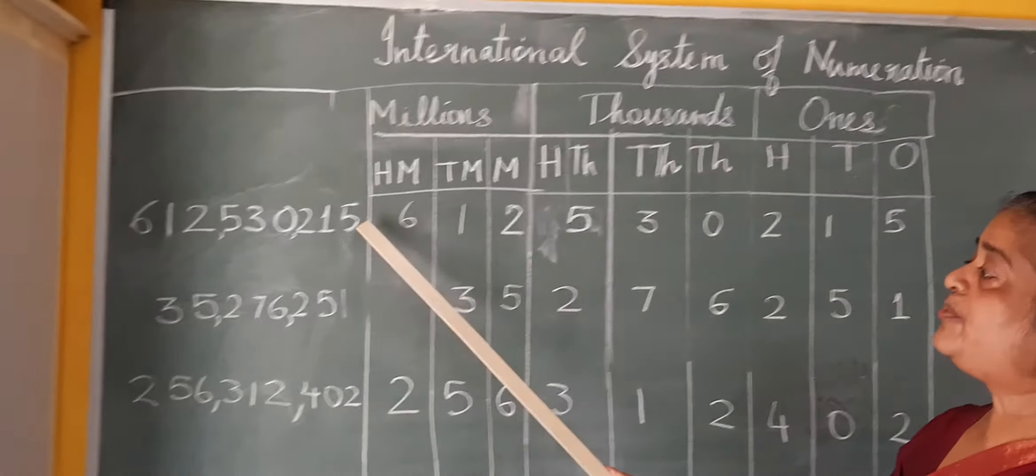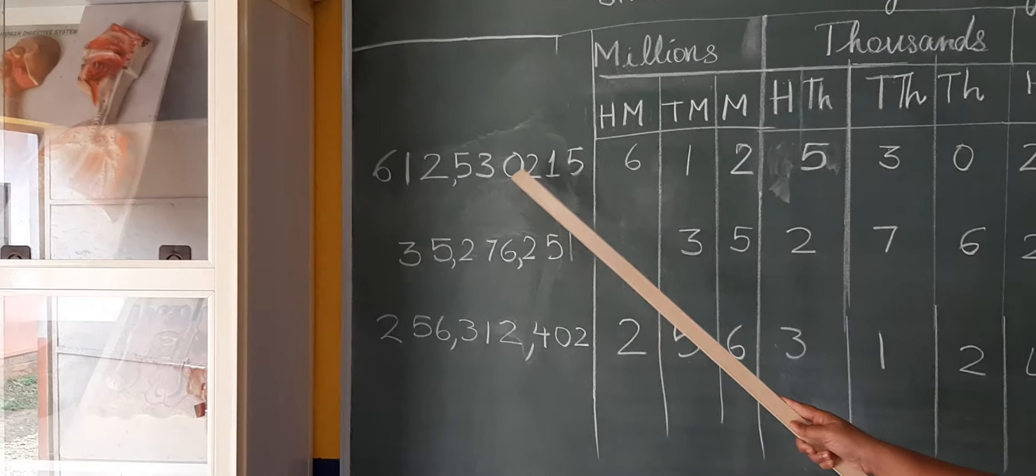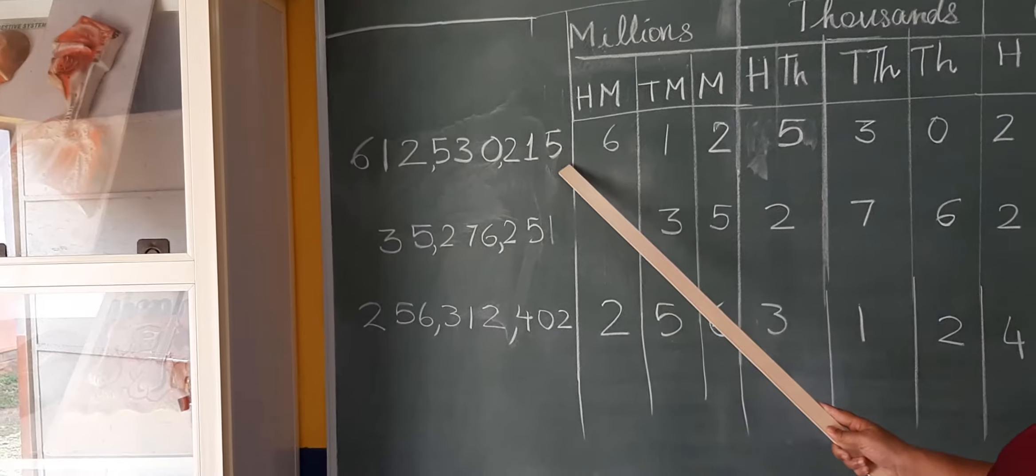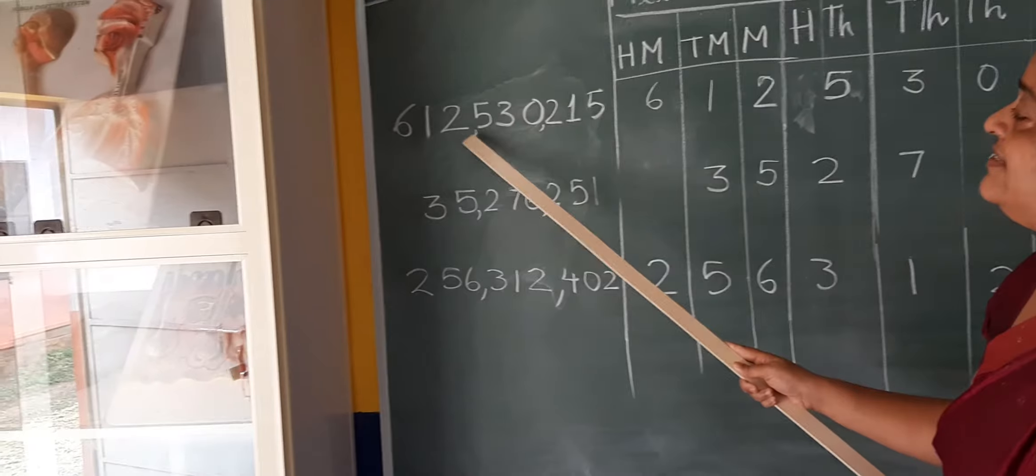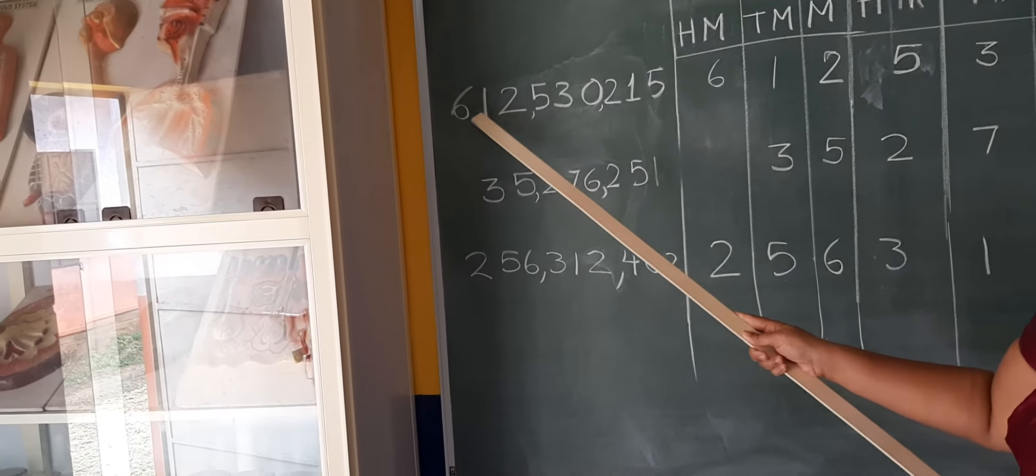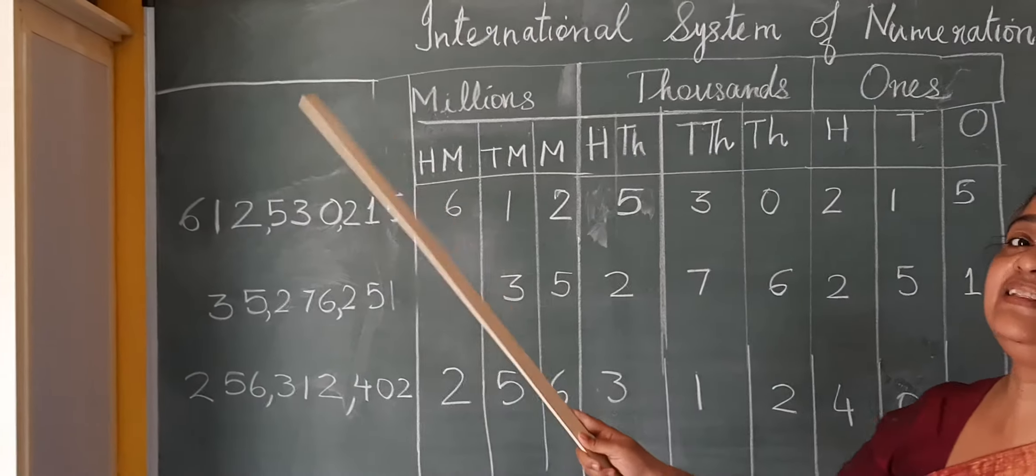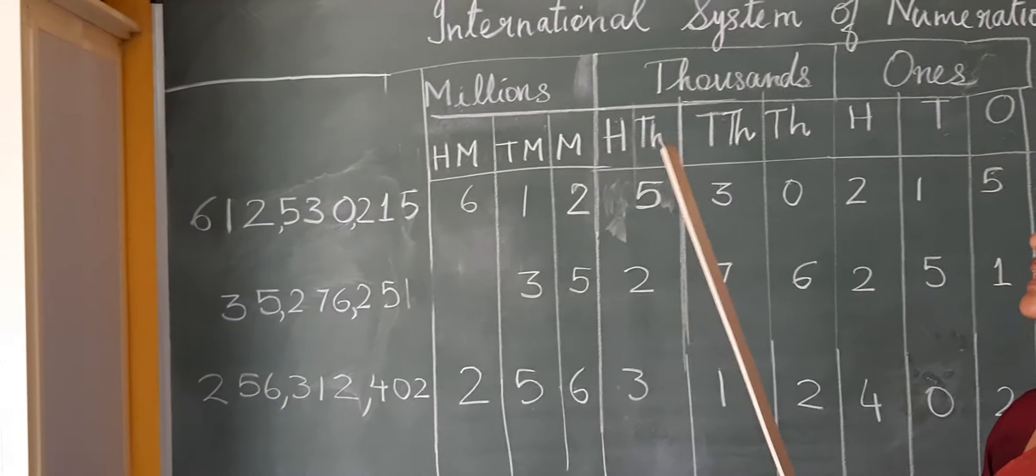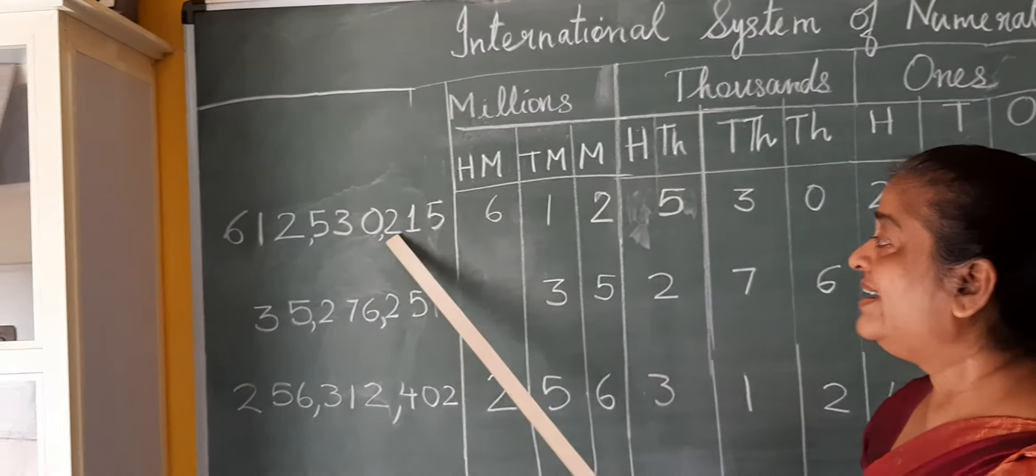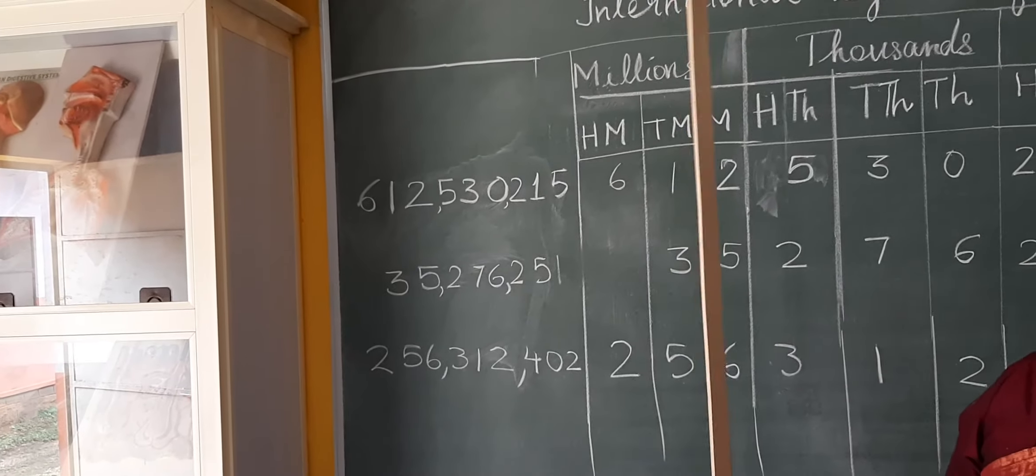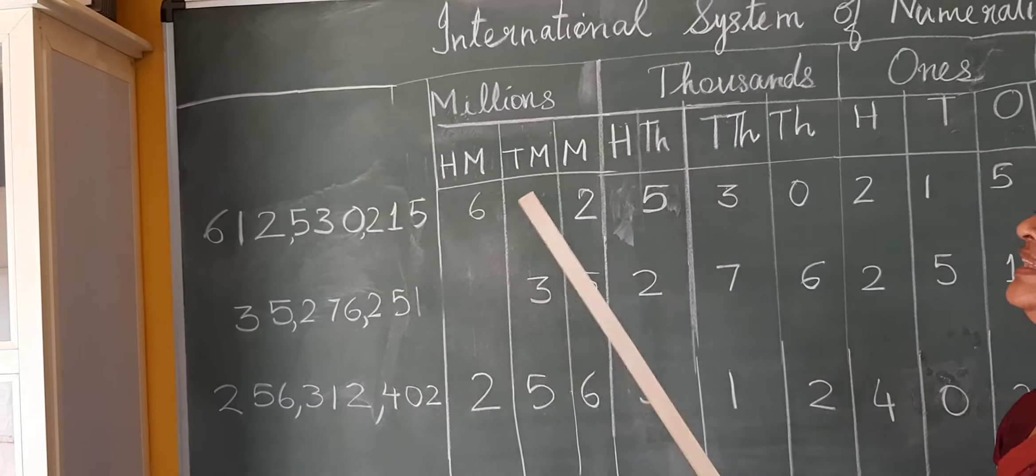When you put the comma, see here we have the number 612530215. When we put the commas, we put a comma after three digits, then again after three digits, then again after three digits. This is the 3-3-3 system. Remember, the international system is a 3-3-3 system, but the Indian system was a 3-2-2 system. First three, then two, then two. The Indian system is 3-2-2, the international system is 3-3-3.